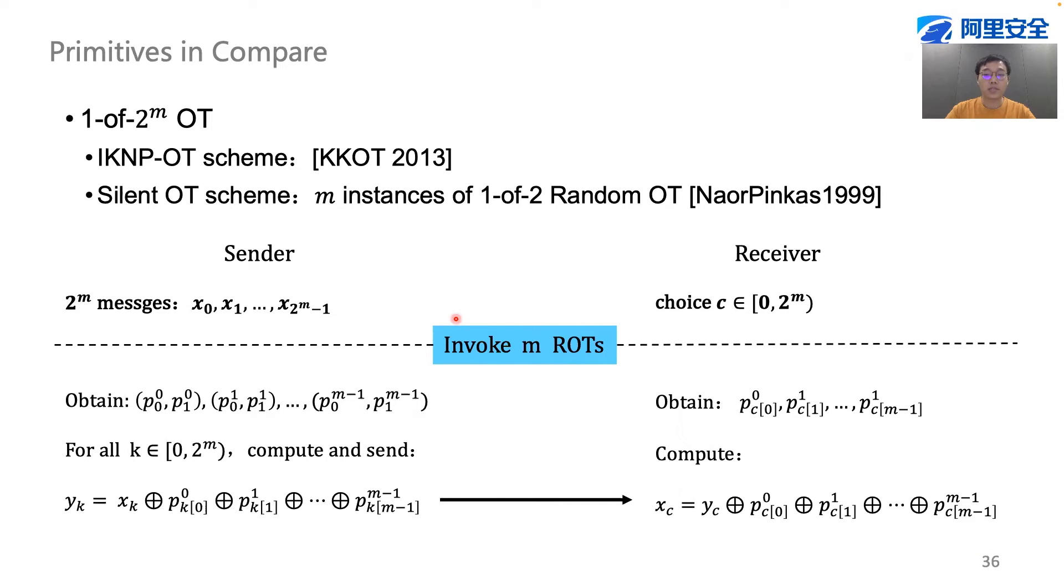This gives us an opportunity to explore the protocol design in a more efficient way. For example, in the comparison tree, we need to use one-out-of-16 OT, where CryptoFlow2 used KKOT that was proposed specifically for IKNP OT in 2013. But in the world of silent OT, we found that using a protocol more than 20 years ago gives a better performance.